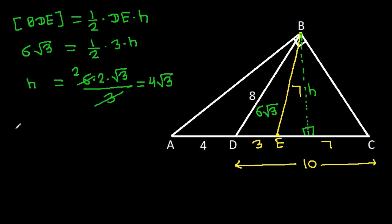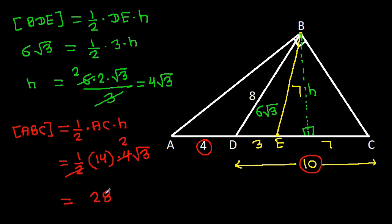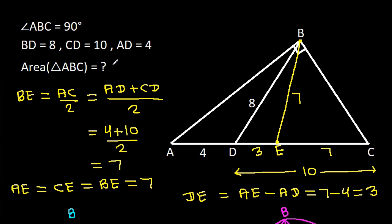Now the area of ABC is equal to 1 by 2 times base AC times height h. AC is 4 plus 10, which is 14. So it is 1 by 2 times 14 times 4√3, and 2 times 2 is 4, so the area is 28√3. So the area of triangle ABC is 28√3.